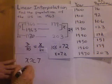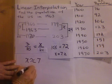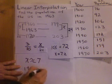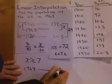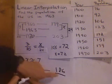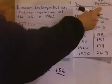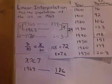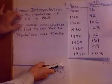So the population in 1963 is about 186 using linear interpolation. And again, that's 186 million because our population was in millions. So here's another type of problem.